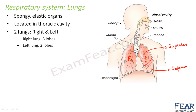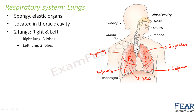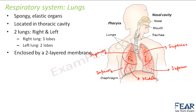The right lung is divided into three lobes. The upper one is the superior lobe, the lower one is the inferior lobe, and the lobe which lies in the middle between the superior and inferior is known as the middle lobe. This is how the lung is divided into different lobes, enclosed by a two-layered membrane.